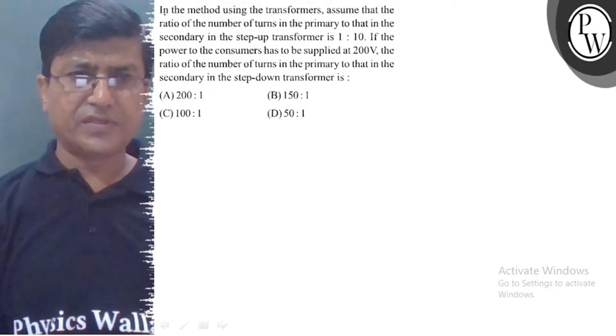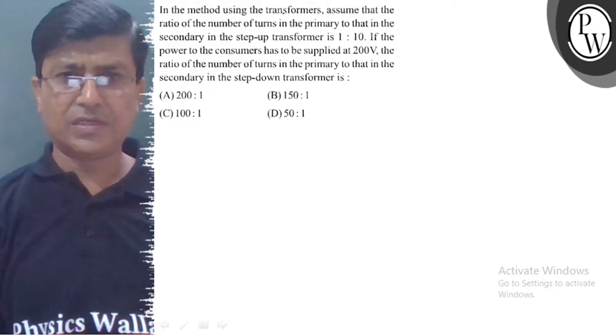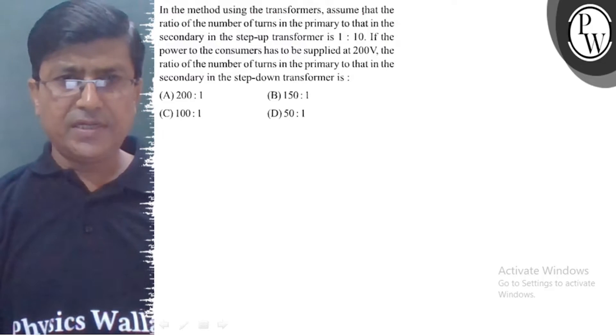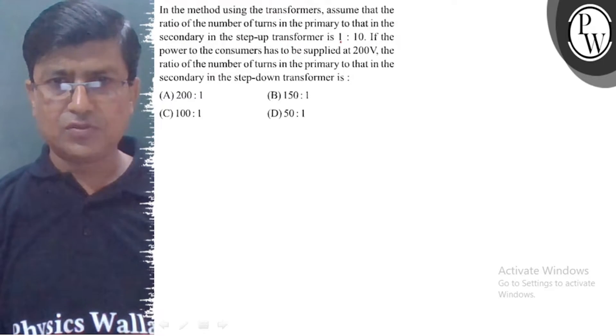Let's understand the question. First question in the method using the transformers: Assume that the ratio of the number of terms in the primary to that in the secondary in the step up transformer is 1 to 10.